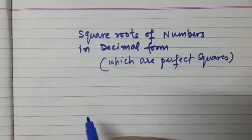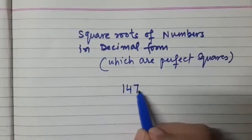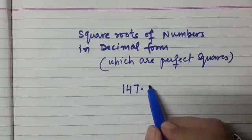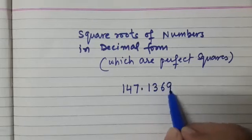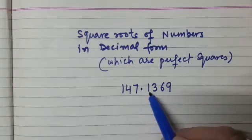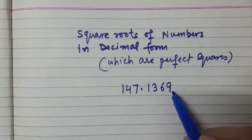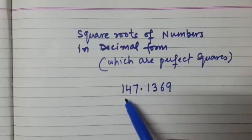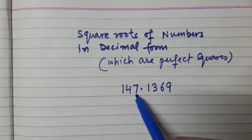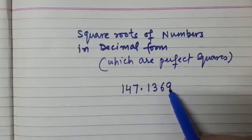So let us say we have 147.1369. I hope you know how to read a number in decimal form. The digits which are after this decimal place, they are to be read separately. So how do you read this? This is 147 point 1369.